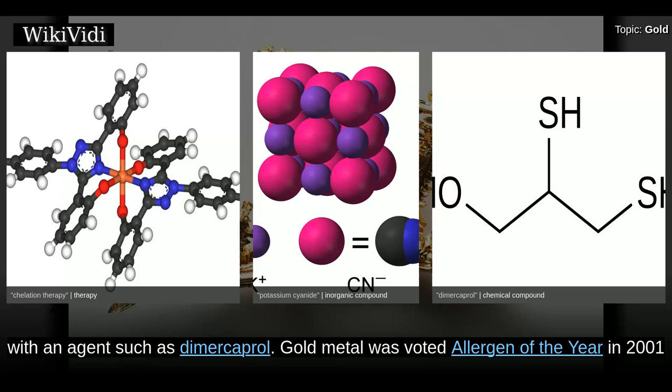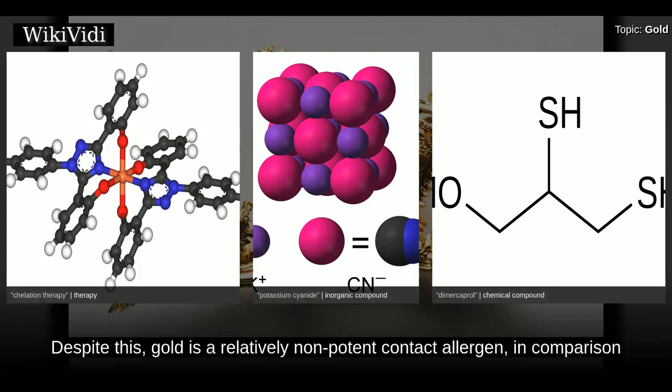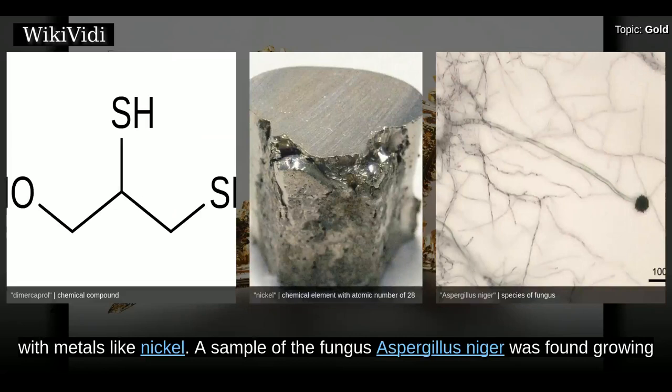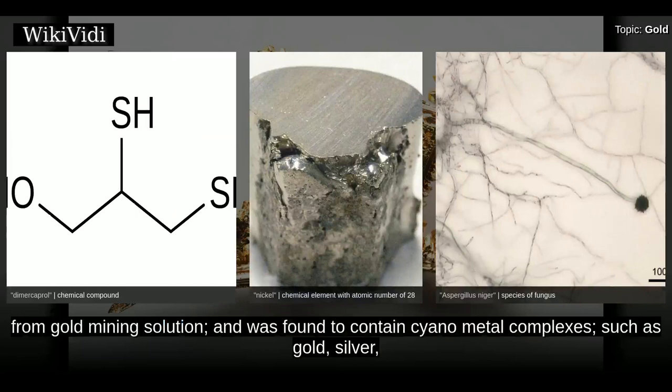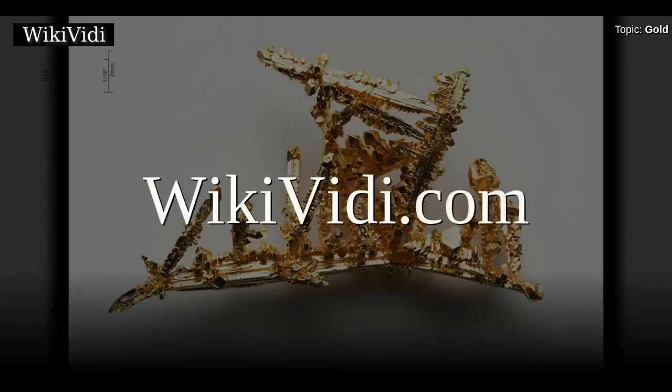Gold metal was voted Allergen of the Year in 2001 by the American Contact Dermatitis Society; gold contact allergies affect mostly women. Despite this, gold is a relatively non-potent contact allergen in comparison with metals like nickel. A sample of the fungus Aspergillus niger was found growing from a gold mining solution and was found to contain cyano-metal complexes such as gold, silver, copper, iron and zinc. The fungus also plays a role in the solubilization of heavy metal sulfides. Brought to you by wikivd.com.